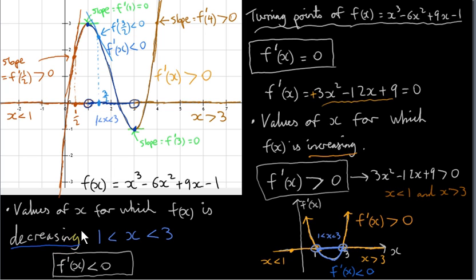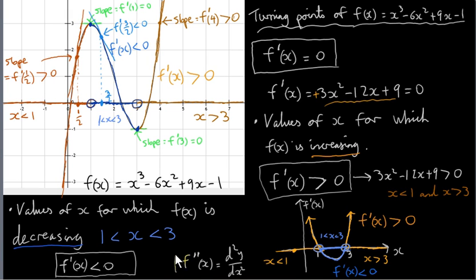In the next video, I will talk about the second derivative of a function. The second derivative is denoted by f double prime of x, or d²y/dx². We will explain what this means geometrically and what it means in terms of the shape of the graph of a function, using this exact example again.